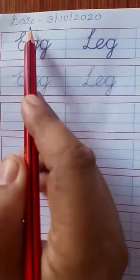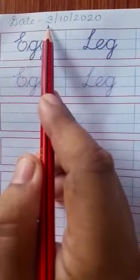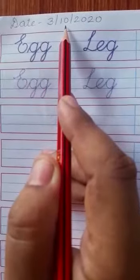First of all, write down the date at the top. Today's date is 3-10, the month of October 2020. Today we will do words that end with the 'egg' sound. Let's start.